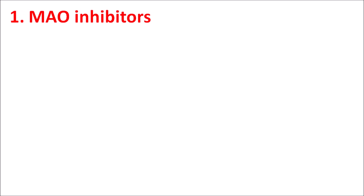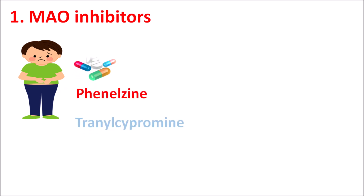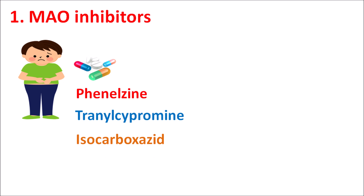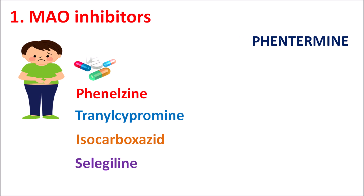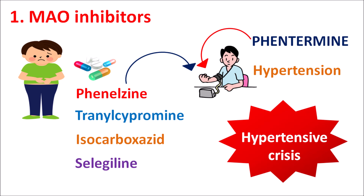The first contraindication is the use of MAO inhibitors. MAO inhibitors like phenelzine, tranylcypromine, and isocarboxazid are used to control depression. Selegiline, a MAO-B inhibitor, is used for Parkinson's disease. If any of these drugs are combined with phentermine, this combination may increase hypertension, and within a few days it can result in severe hypertension leading to hypertensive crisis — a fatal condition requiring emergency treatment.